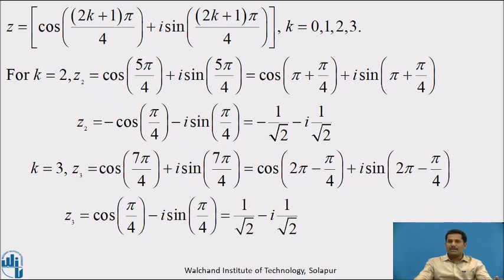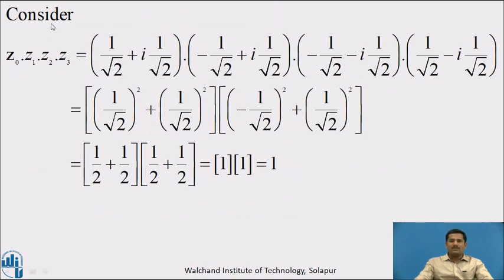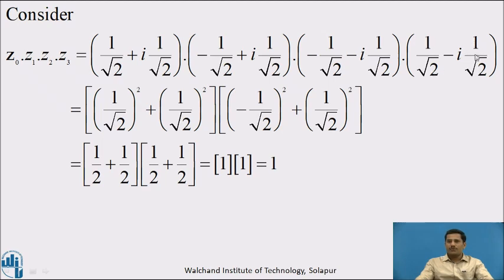Now we have to show that the continued product of all these values z₀, z₁, z₂, z₃ is 1. Consider their continued product: z₀·z₁·z₂·z₃ = (1/√2 + i/√2)(−1/√2 + i/√2)(−1/√2 − i/√2)(1/√2 − i/√2).